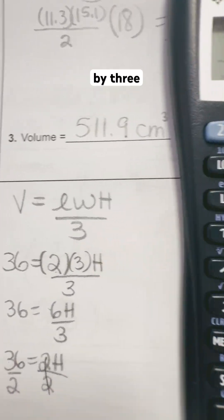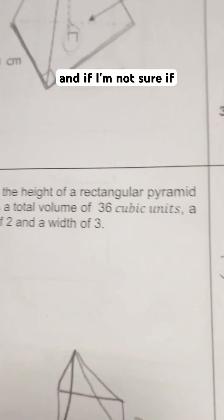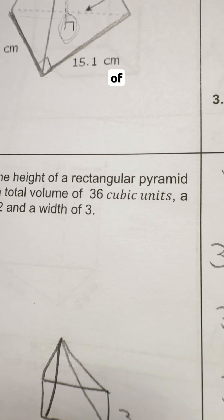We want to make sure we divide by 3. We divide by 3, we get 36, which we said was the volume of this pyramid.